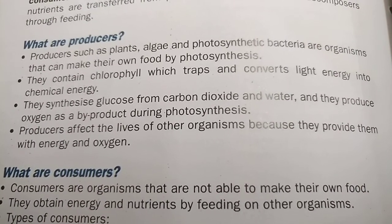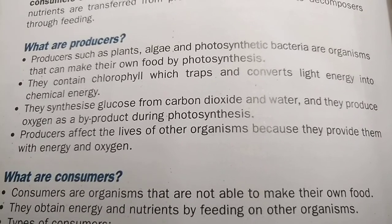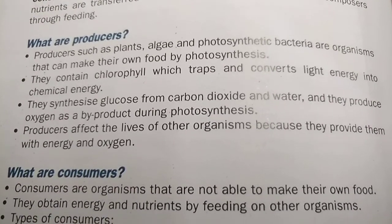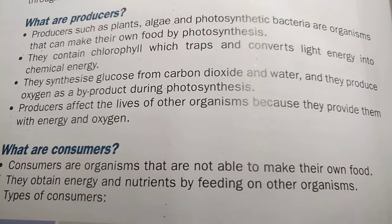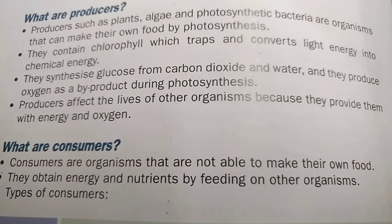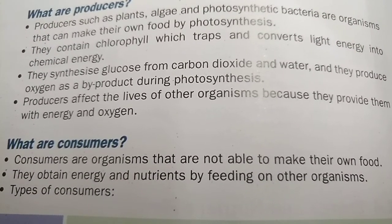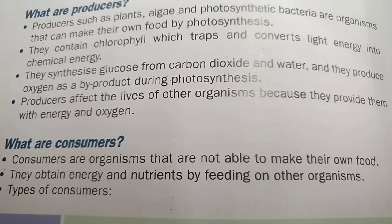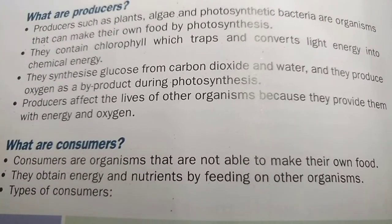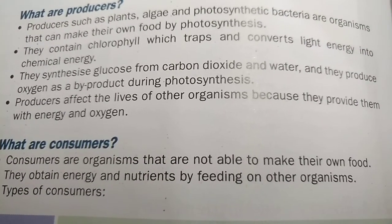Producers — such as plants, algae, and photosynthetic bacteria — are organisms that can make their own food by photosynthesis. They contain chlorophyll, the green colour pigment, which traps and converts light energy into chemical energy. They synthesize glucose from carbon dioxide and water, and they produce oxygen as a byproduct during photosynthesis. That's why we should be thankful to plants, because they give us oxygen.